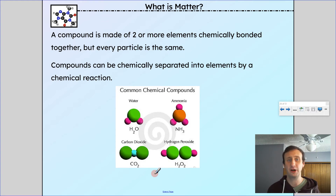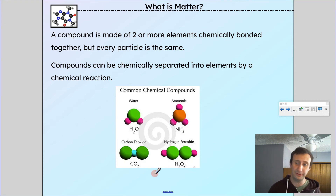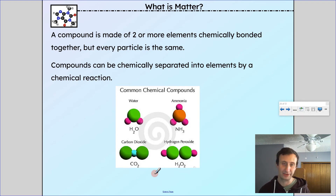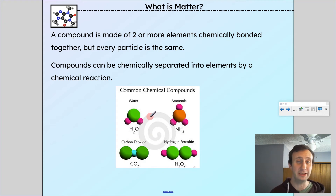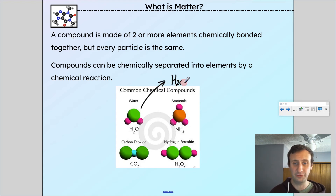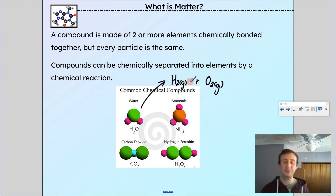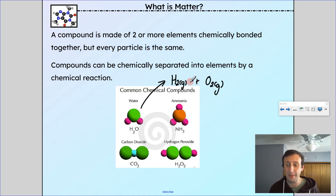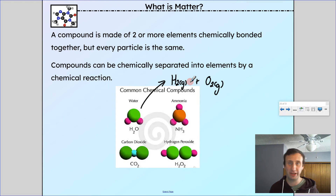In a compound, I have two or more elements that are chemically bonded together, but every particle is still the same. Compounds can be chemically separated into elements by a chemical reaction. For example, water can be chemically separated into hydrogen gas (H2) and oxygen gas (O2) by running electricity through it — but that's by a chemical reaction, it doesn't just happen on its own.